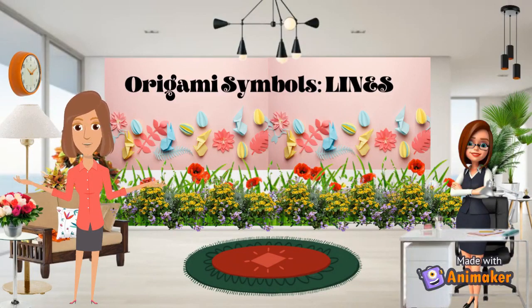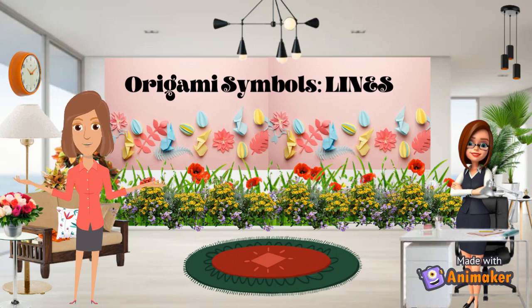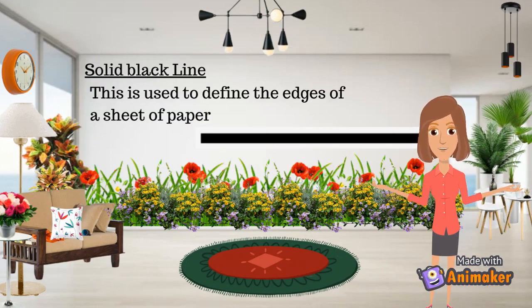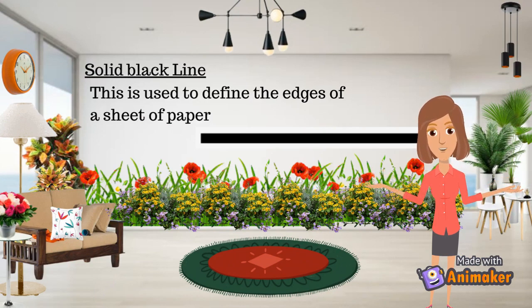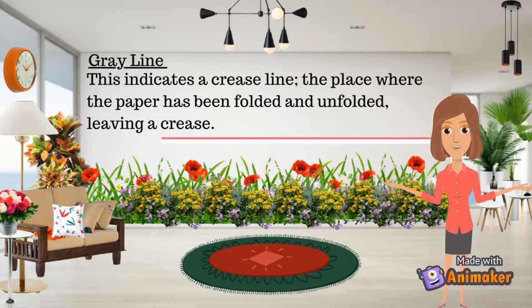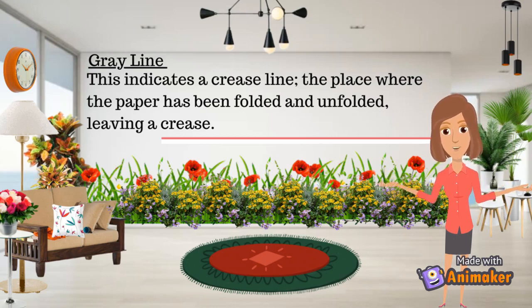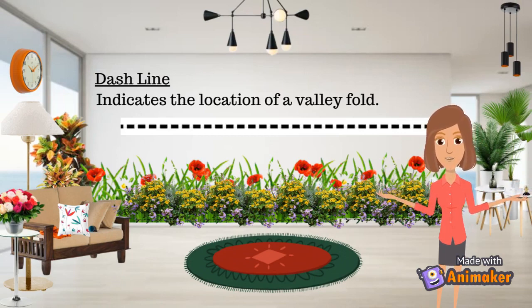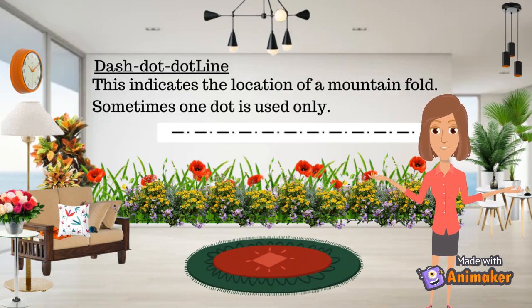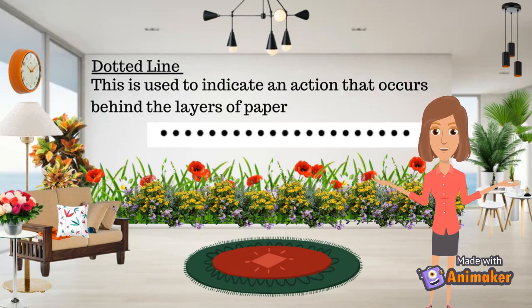Now we move on to the different Origami symbols. The first symbols are the lines. The first is the solid black line, used to define the edges of a sheet of paper. Next is the gray line, which indicates a crease line — where the paper has been folded and unfolded leaving a crease. Next is the dash line, which indicates the location of a valley fold. The dash-dot-dot line indicates the location of a mountain fold.